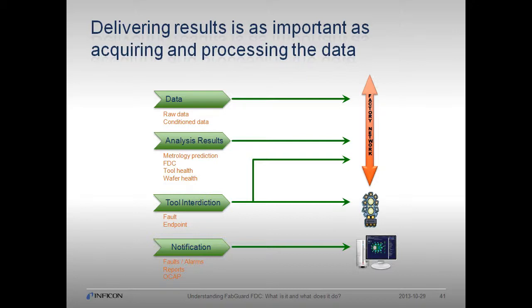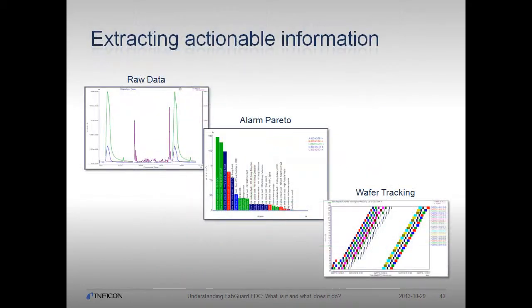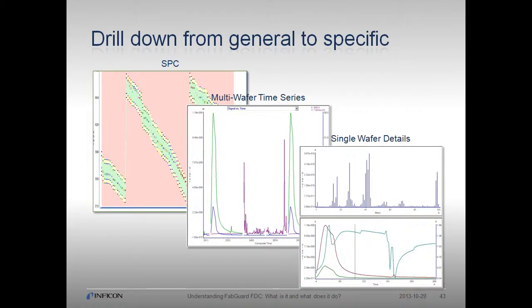After data has been processed and appropriate analyses applied, we need a way to get results back out to the factory. FabGuard can send data and results to the factory, notify engineers when a fault has occurred, and send process halt messages back to the equipment. Using collected and processed data, we can extract information using a variety of displays including raw time series data, Pareto plots, and wafer tracking plots. FabGuard can display maintenance, tool alarm, and summary reports, as well as tool and chamber, process, and wafer information. FabGuard also contains sophisticated drill-down capability to explore data from different points of view; for example, you can begin with summarized data in an SPC report and drill down to time series data of multiple or single wafers using a right-click menu.